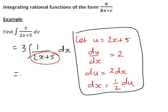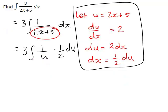So looking at our original expression then, that becomes 3 times the integral of 1 divided by u, and dx is replaced with a half du. The half can then be taken outside the integral sign, so that we have 3 times a half, which is 3 divided by 2, multiplied by the integral of 1 on u du, which is now just a standard integral.